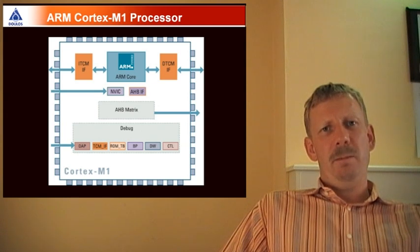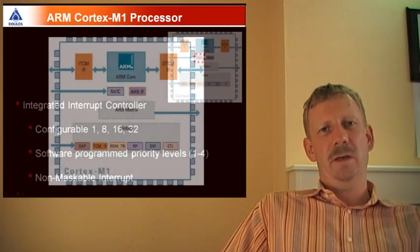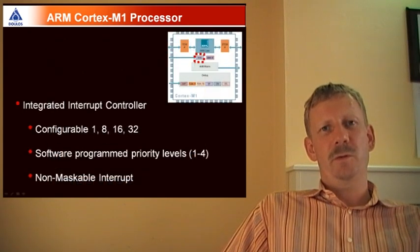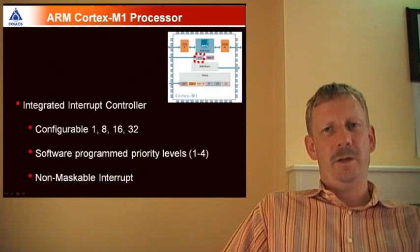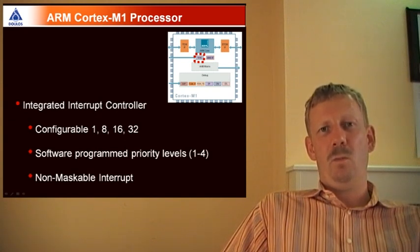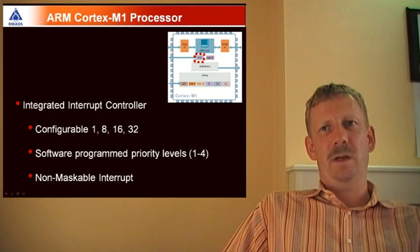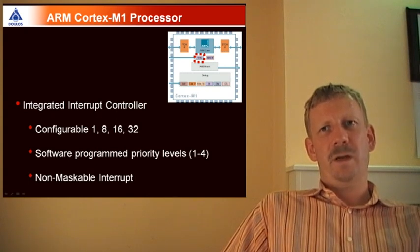ARM has implemented in the Cortex-M architecture an integrated interrupt controller. Different from all other ARM architectures before, in the Cortex-M architecture and now for the Cortex-M1, the vector interrupt controller is a fixed part of the processor core itself.